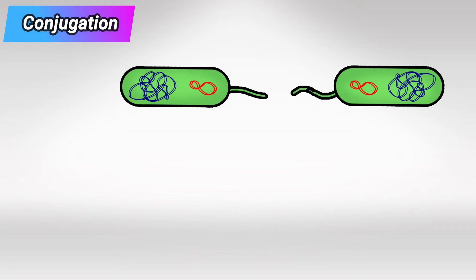So now the other bacteria have genes coding for the antibiotic resistance and genes coding for the sex pilus.